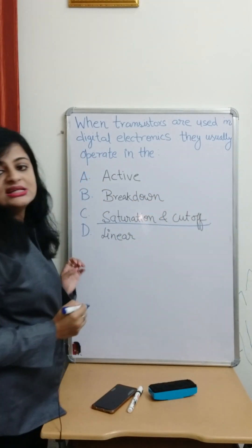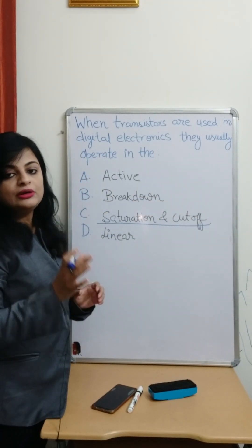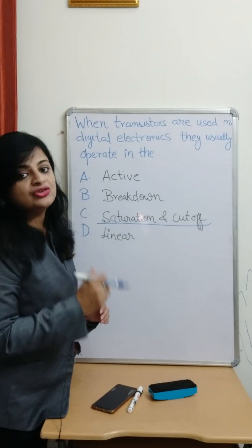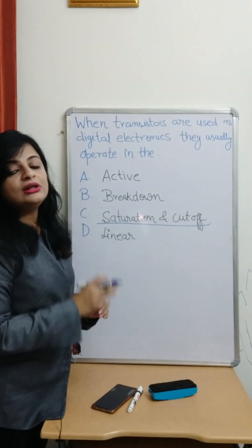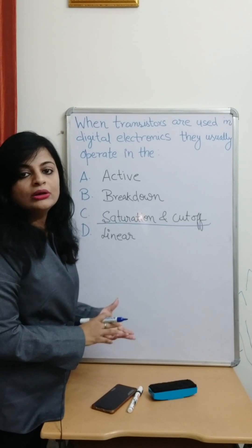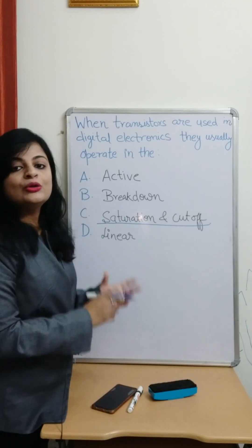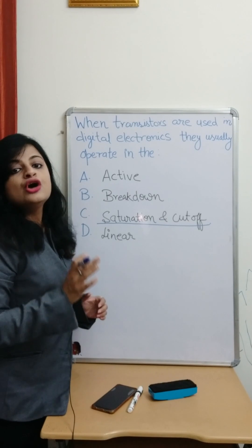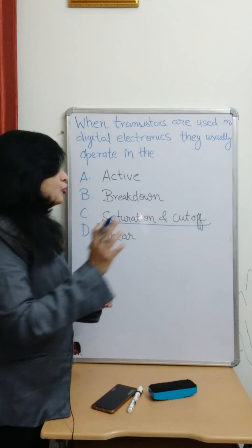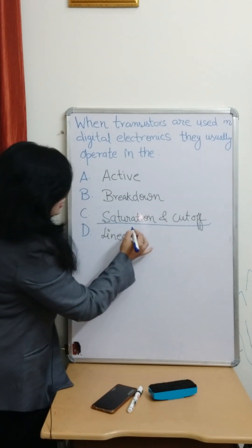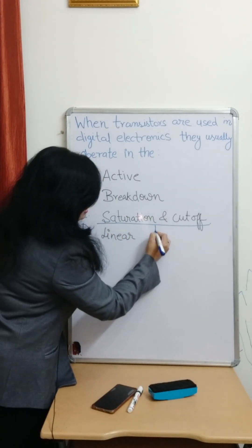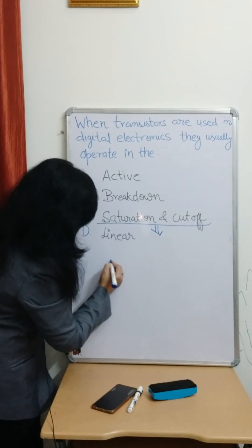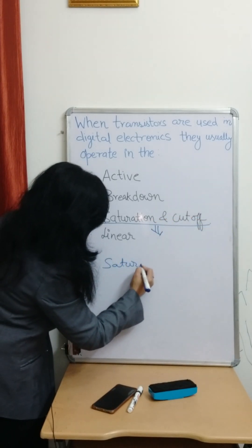The reason is that in digital electronics, you need a switch. Digital electronics works in either on or off — one or zero. So in that condition, we use the transistor as a switch. For acting as a switch, the transistor should be in saturation and cutoff region.